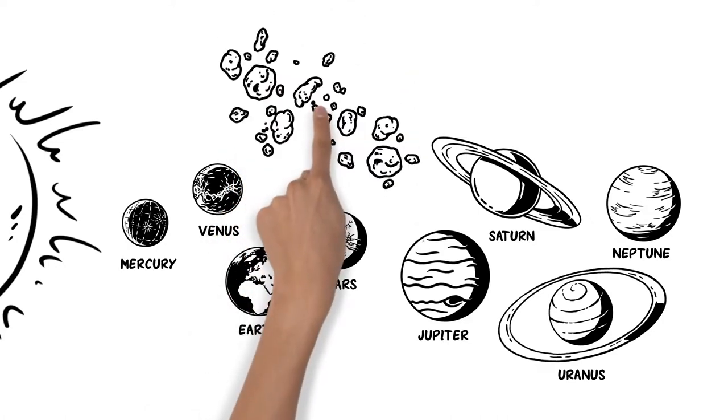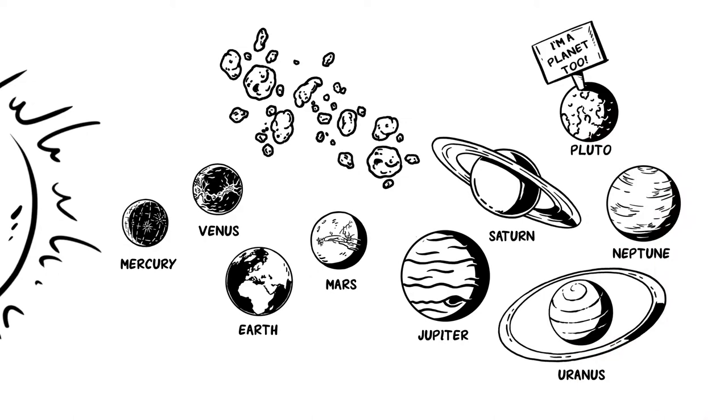The asteroid belt and the so-called trans-Neptune objects, like the dwarf planet Pluto, are also revolving around the Sun.